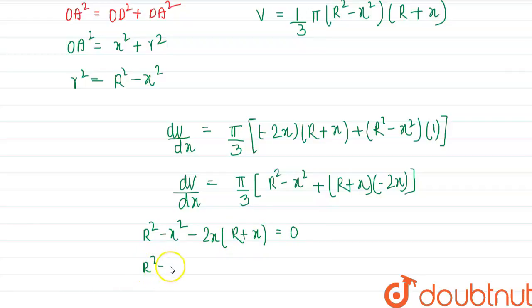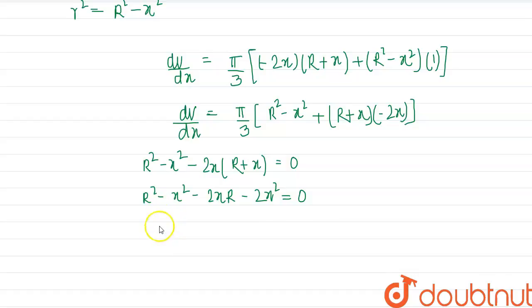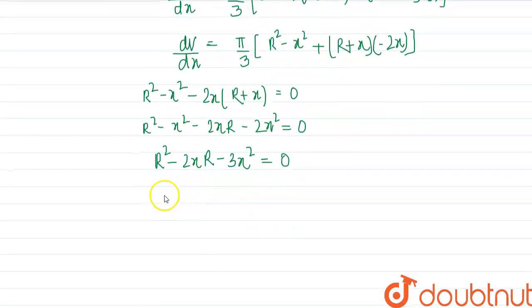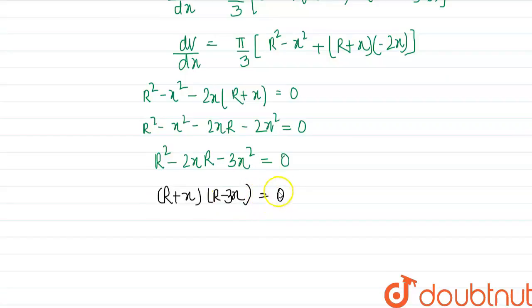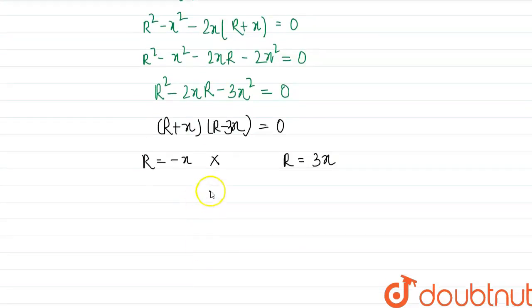Expanding: R² − X² − 2XR − 2X² = 0. Factoring, this gives (R + X)(R − 3X) = 0. Since R cannot equal −X, we have R − 3X = 0, so X = R/3.